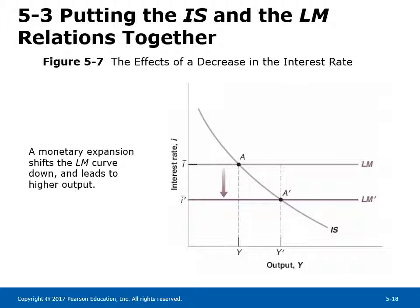An increase in money supply leads to a decrease in the interest rate. The lower interest rate leads to an increase in investment and in turn an increase in demand and output. Considering the effects on components of demand: consumption C increases because income increases; government spending G remains unchanged; investment I definitely increases since output Y is higher and the interest rate I is lower — both effects lead to an increase in investment.